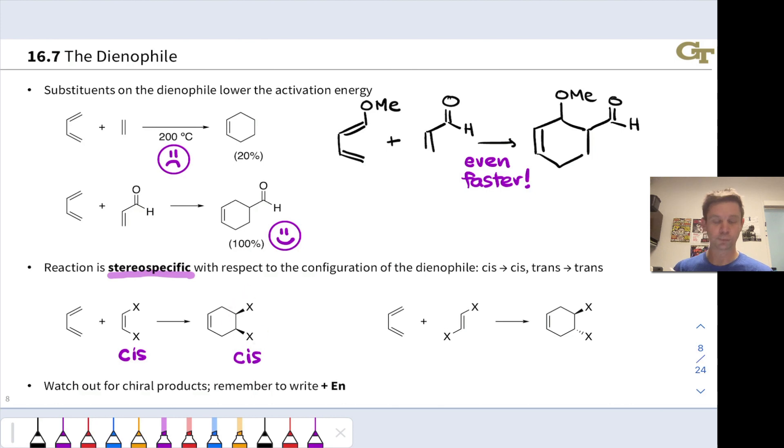Likewise, if we start trans with X substituents on the opposite sides of the double bond, we end up with a trans cyclohexene product with the two X substituents on opposite sides of the cyclohexene ring.